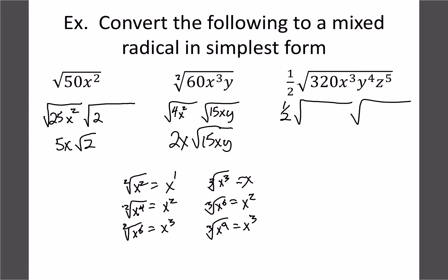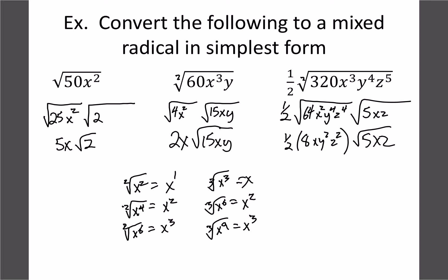For (1/2)√(320x³y⁴z⁵): leave the 1/2 aside for now. For 320: 320÷64=5, so 64×5. For the variables under a square root — pull out multiples of 2: from x³ pull out x² (one x left over), from y⁴ pull out all four (nothing left), from z⁵ pull out z⁴ (one z left over). The square root of 64x²y⁴z⁴ = 8xy²z², then multiply by 1/2 to get 4xy²z²·√(5xz).